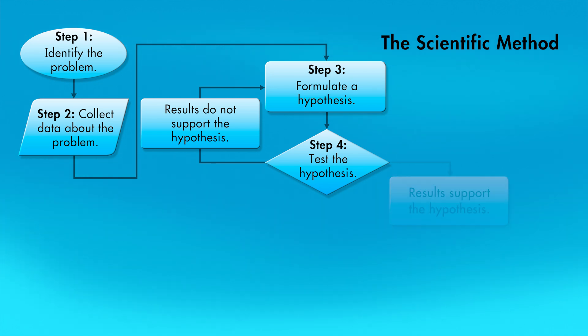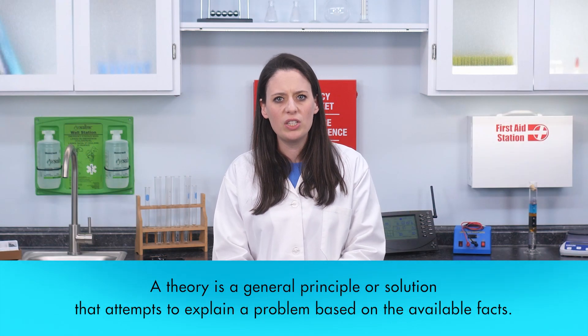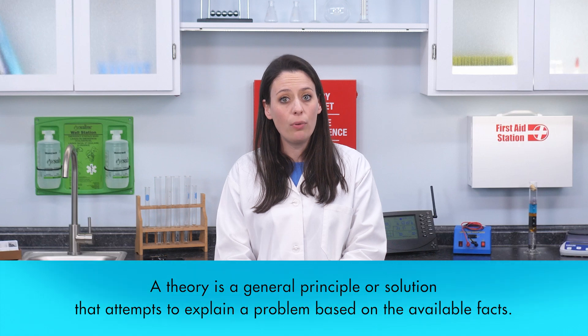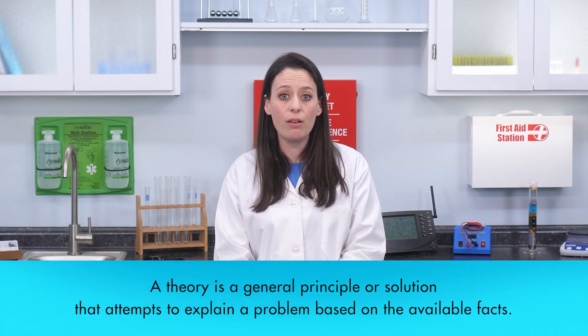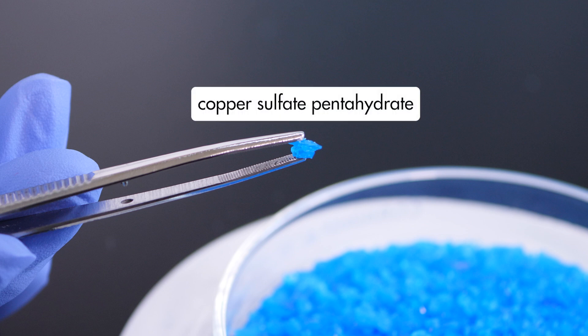Since the experiments supported our hypothesis, we can conclude that our hypothesis is valid. Since our hypothesis is valid, we continue to the next step of the scientific method, which is, draw a conclusion and formulate a theory. A theory is a general principle or solution that attempts to explain a problem based on the available facts. In this case, our theory is the same as our hypothesis, that the crystalline substance is copper sulfate pentahydrate.